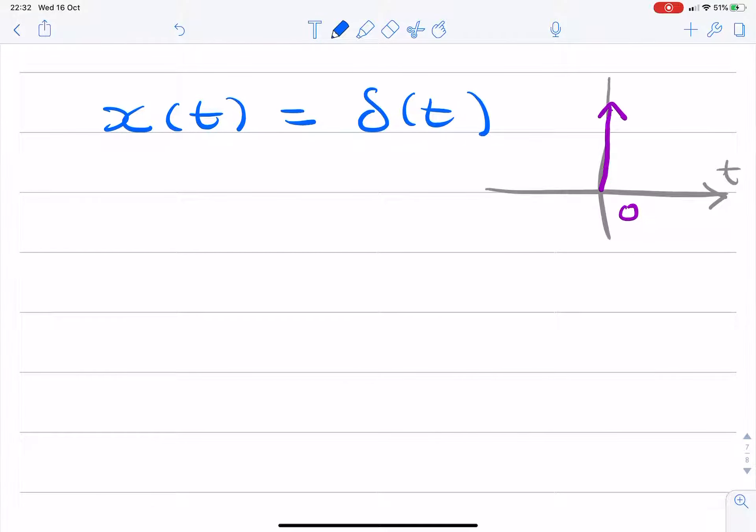This question asks for the Fourier transform of a unit impulse. We have a unit impulse, or a delta Dirac function, and it's asking for the Fourier transform.